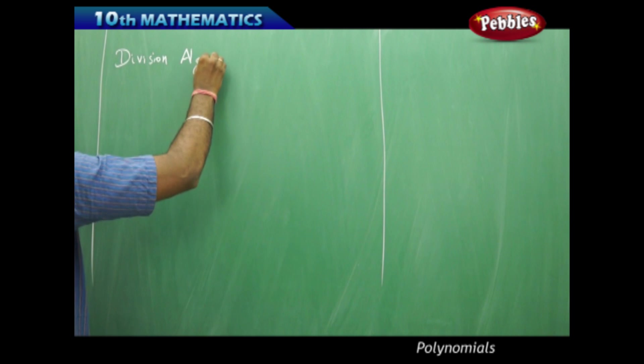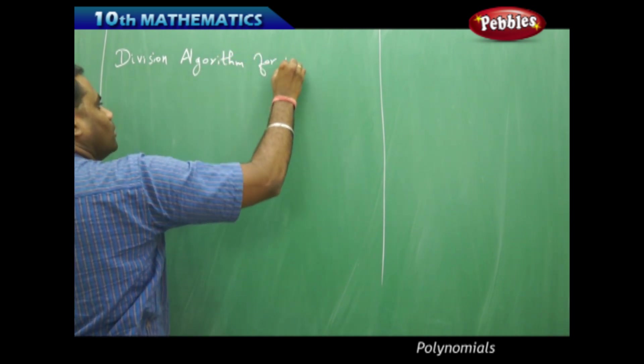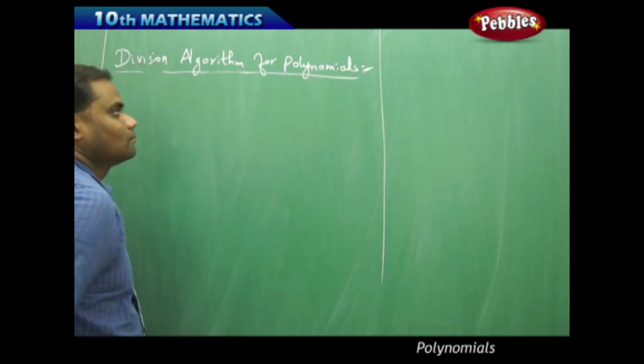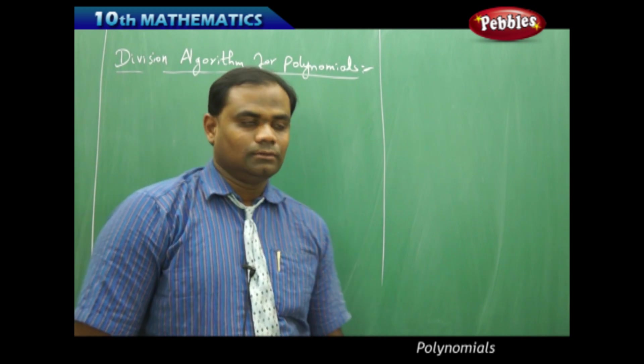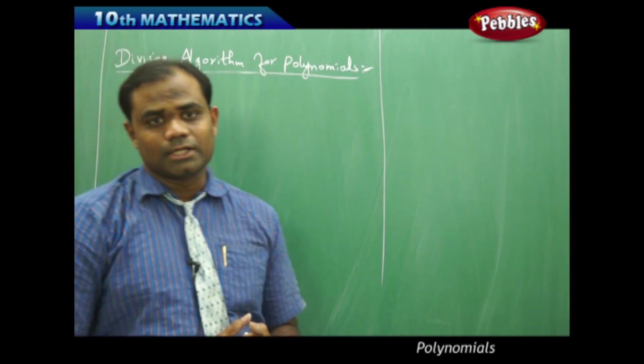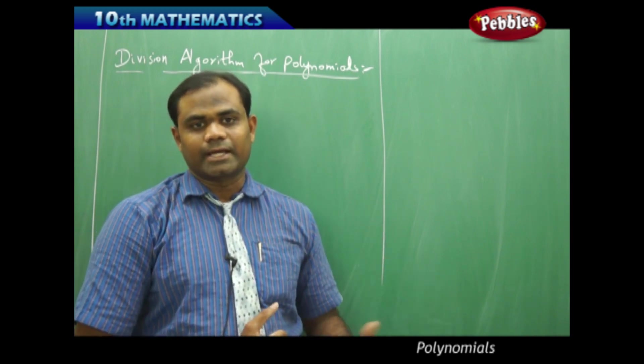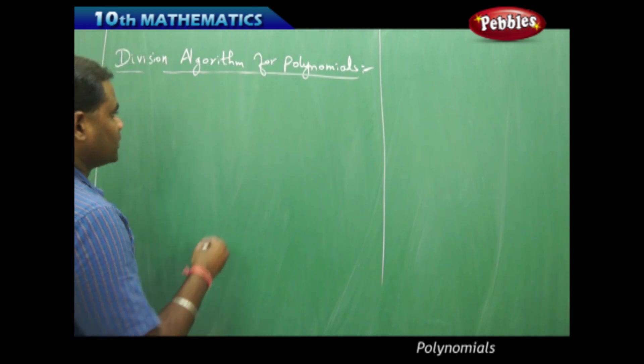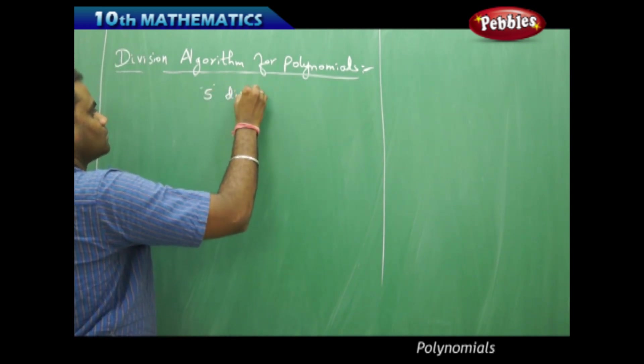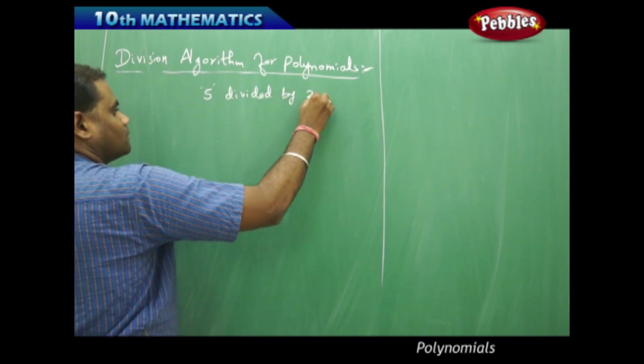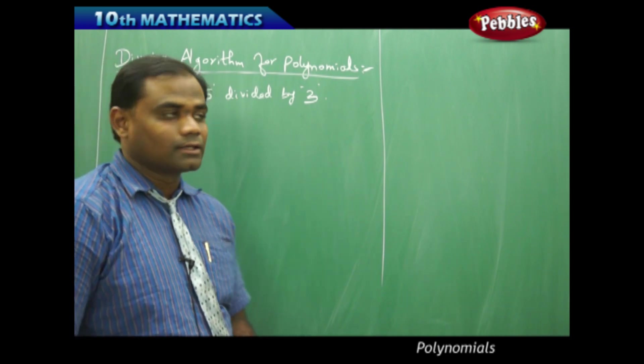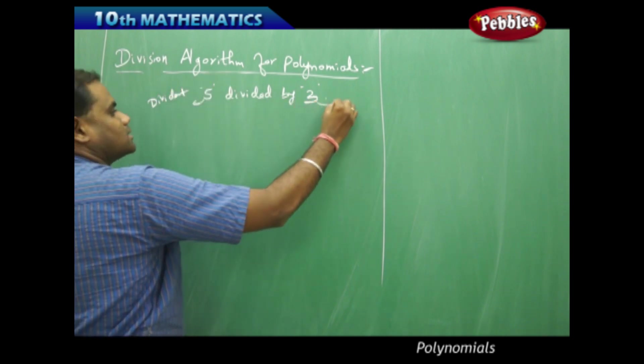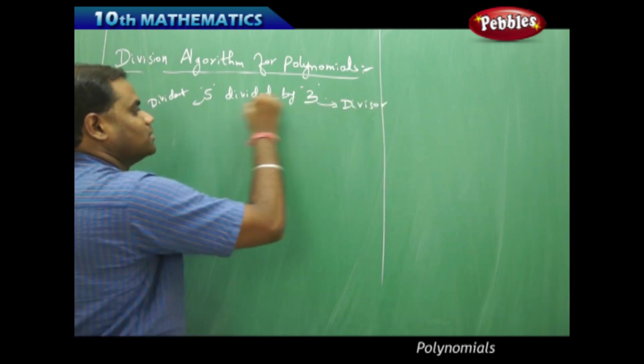Division algorithm for polynomials is what we are going to discuss. We'll continue with some numbers as a recap of the lower class sessions to understand the division algorithm. For example, I take 5 divided by 3. When I divide 3 with 5, I call this the dividend and I call this the divisor because this is the one I am dividing with 5.